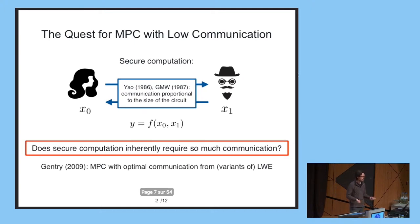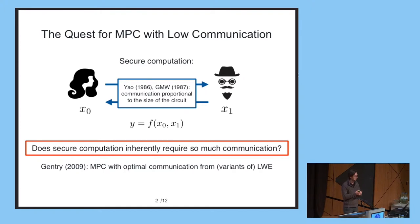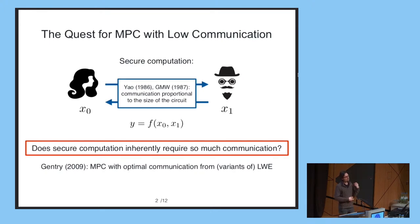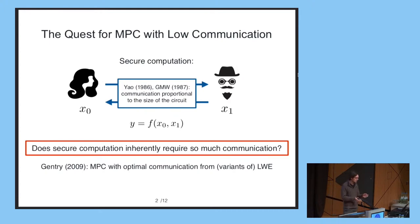Since the breakthrough work of Gentry in 2009, we know that under some suitable computational assumptions, or some variants of the learning with errors assumption, it's actually possible to securely compute any function with optimal communication — input size plus output size, plus some polynomial in the security parameter. And it was also learned more recently that it's possible to securely compute a large class of functions with communication sublinear in the size of the circuit, under the decisional Diffie-Hellman assumption. So under computational assumptions that are widely believed to hold, this is more or less a solved problem.